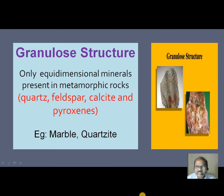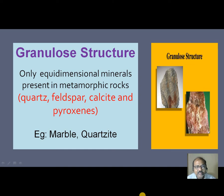Granular structure. Equidimensional minerals — that means all the minerals are more or less equal in size — for example, quartz, feldspar, calcite, pyroxene. If they are present in the metamorphic rock, we say the rock is exhibiting granular structure. Marble and quartzite are examples.